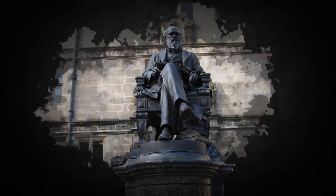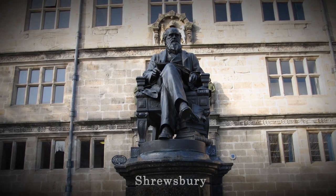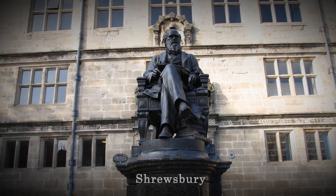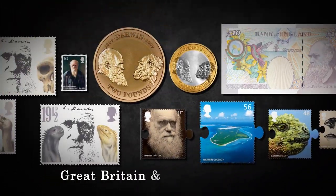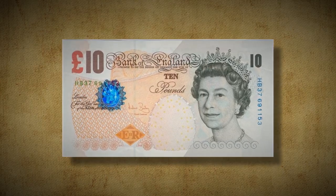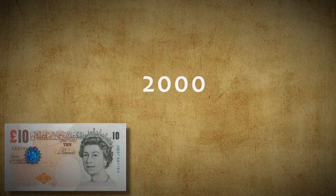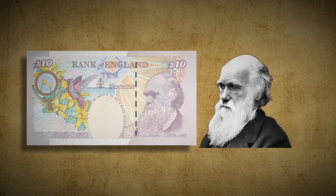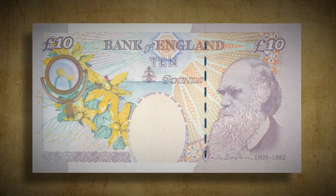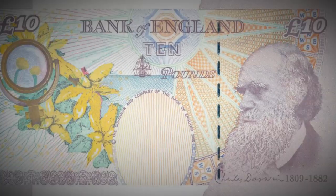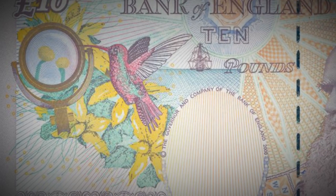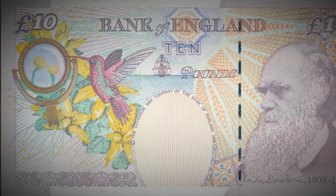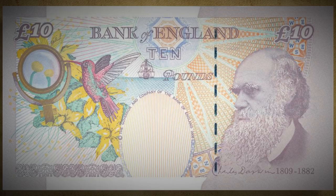Charles Darwin has been immortalized by his motherland and is often depicted on various stamps, coins and banknotes of the United Kingdom of Great Britain and Northern Ireland. The £10 banknote issued by the Bank of England in 2000 features Charles Darwin on the reverse, with images of the HMS Beagle and a hummingbird looking at the magnification of a flower — the natural elements capturing the ideologies of the naturalist.